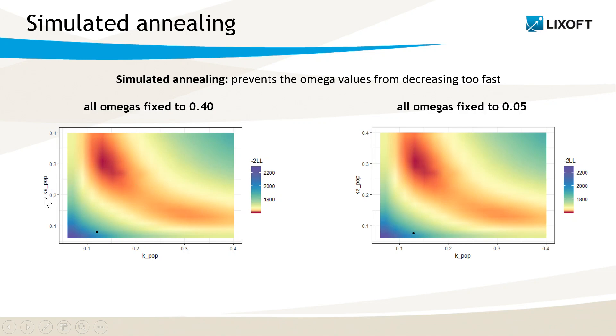In this plot, the color map represents the objective function value for this model, depending on the value of KA and K, and also V but I can only plot in two dimensions. We can see that for this model I have a local maximum here and the global maximum likelihood here.